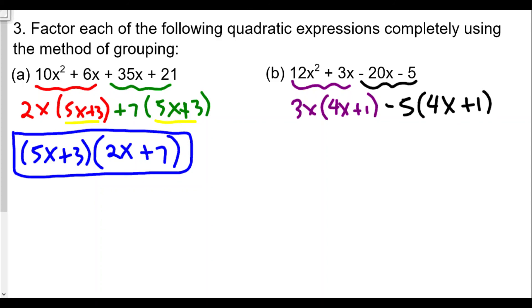And again, we see that they both have (4x + 1) as the remaining factor. So when we factor the GCF one more time, the greatest common factor between both of them will be the (4x + 1), and the remaining factor would be (3x - 5).